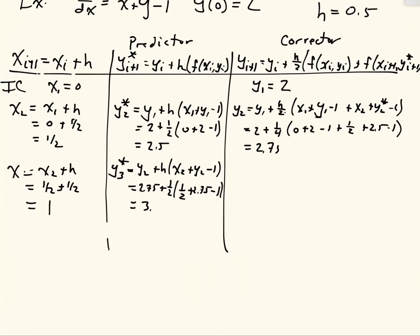Then y_3 star comes out to 3.875, and then we're going to have our actual y_3, which is y_2 plus h/2 times our f evaluated at x_i, y_i, which is x_2 plus y_2 minus 1, plus x_3 plus y_3 star minus 1. And if I plug numbers in, y_2 was 2.75, h is a half divided by 2 is a fourth, x_2 was a half, y_2 is 2.75 minus 1, plus x_3 is 1, y_3 star is 3.875 minus 1. If I do the math, we get 4.28.